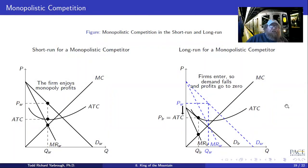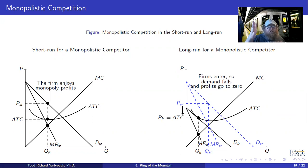To wrap up chapter eight, King of the Mountain, we're going to talk about two other types of market structures. At this point we've defined perfect competition on one end as one baseline, and we've defined monopoly on the other end of the baseline.